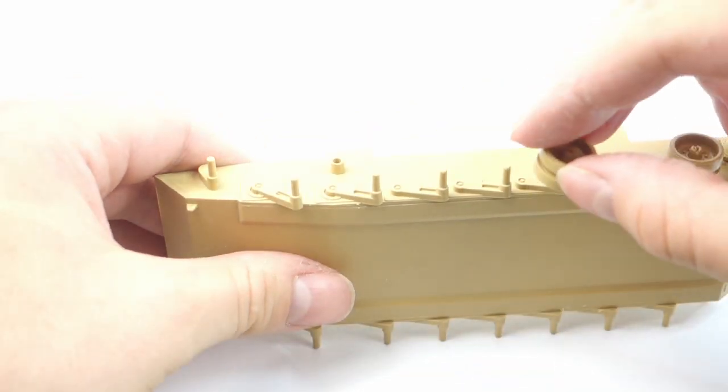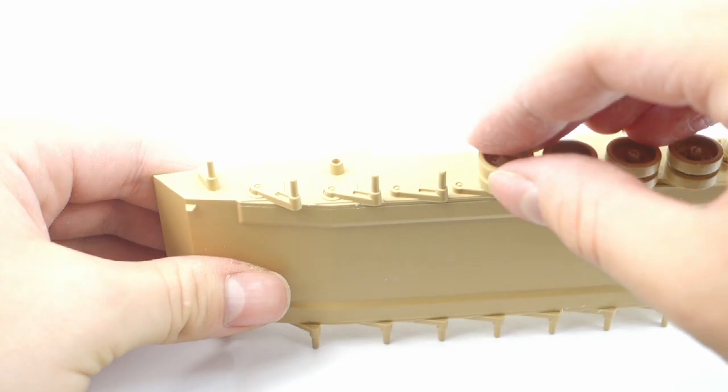Here you can see how the sprocket is still movable after attaching to the model. I also place all those wheels just temporarily for now, as I'll keep them separate for easier painting.